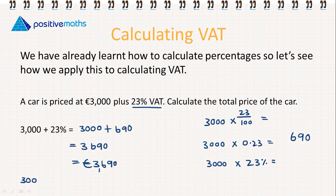The other way we can do it is to type 3,000 plus 23% into the calculator, and we will find our total straight away.